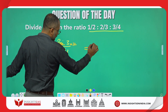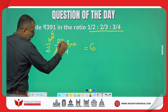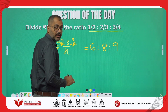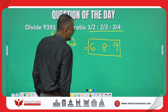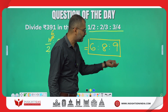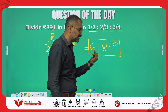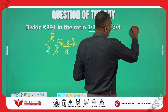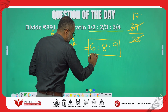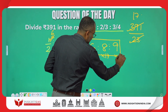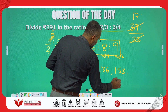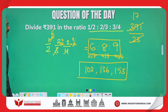Multiplying by 12: 1/2 of 12 is 6, 2/3 of 12 is 8, and 3/4 of 12 is 9. So the ratio becomes 6 : 8 : 9. Adding these parts: 6 + 8 + 9 = 23 parts. Dividing 391 by 23 gives 17 per part. Therefore the three shares are: 6×17 = 102, 8×17 = 136, and 9×17 = 153. This is the division of 391.